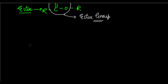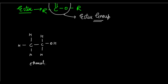Ethanol has the formula C2H5OH. Its structure can be denoted as CH3 bonded to CH2, then OH. This is ethanol. Ethanol reacts with a carboxylic acid — let's take ethanoic acid — which has the structure CH3, C double bond O, OH. This is ethanoic acid.